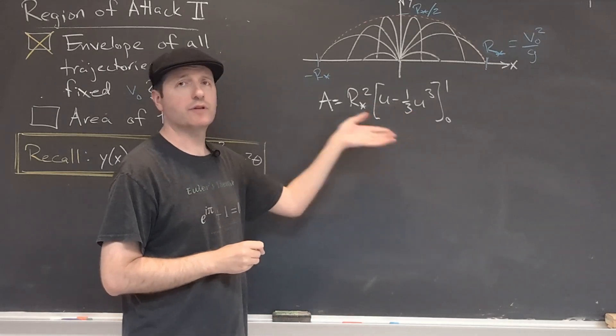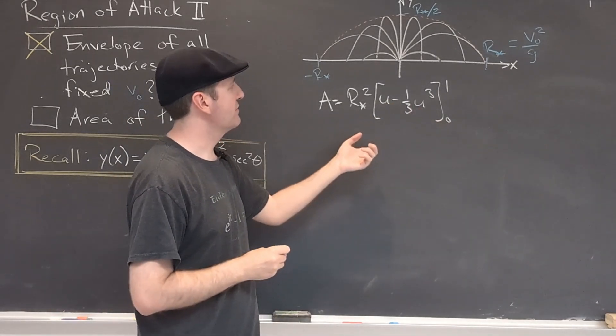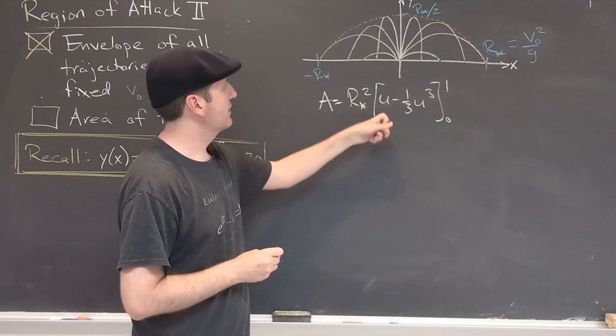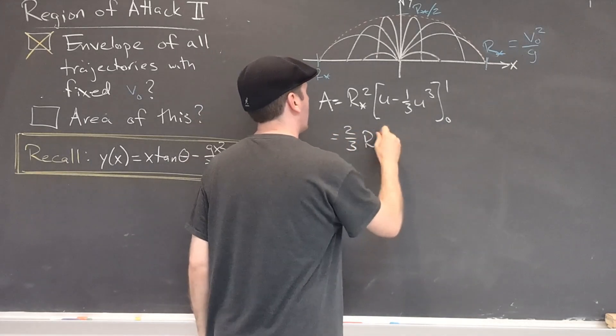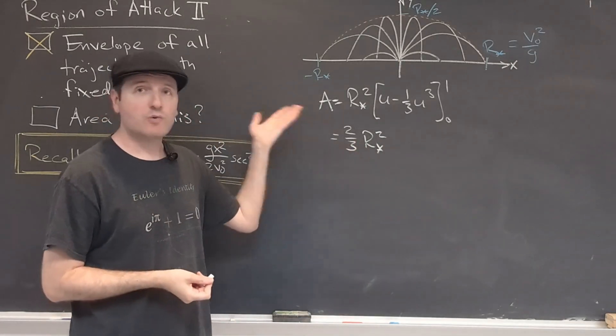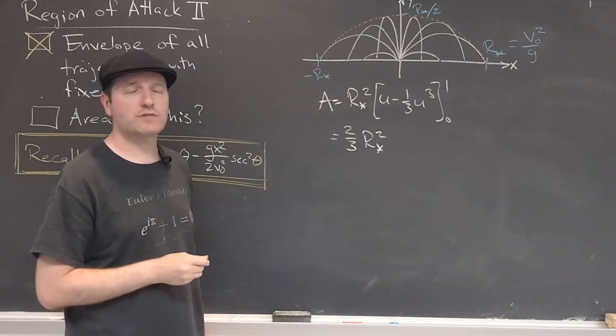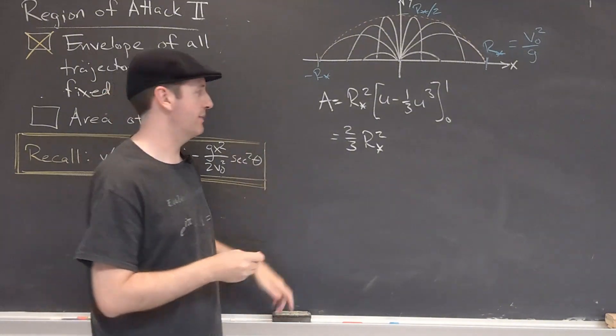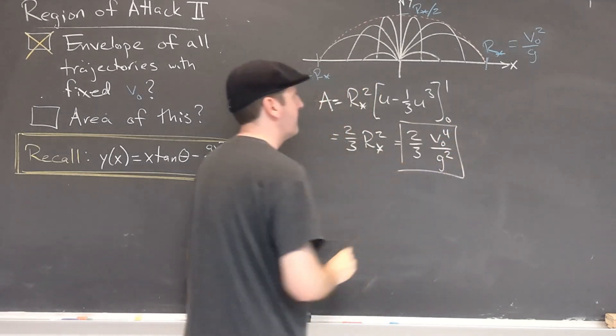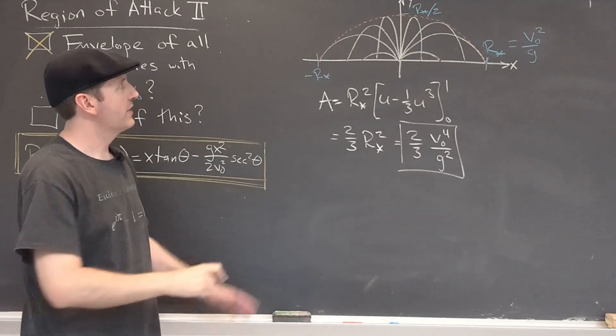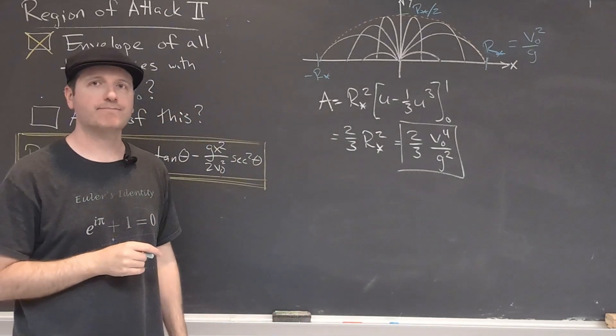Okay, so I did the anti-derivative of the constant one term and then the minus U squared term, power rule. Plugging in the zero to either of those will, of course, give zero. Plugging in the top value for the fundamental theorem of calculus, I'll get one minus one-third, which gives me two-thirds. This has the right dimensions. It's a distance squared, which will indeed give me an area. But let's go ahead and just use our last result, which is that R star itself is V naught squared over G, to rewrite this in terms of the given parameters. And there is the area of this entire envelope of trajectories at any given launch angle with a fixed V naught.